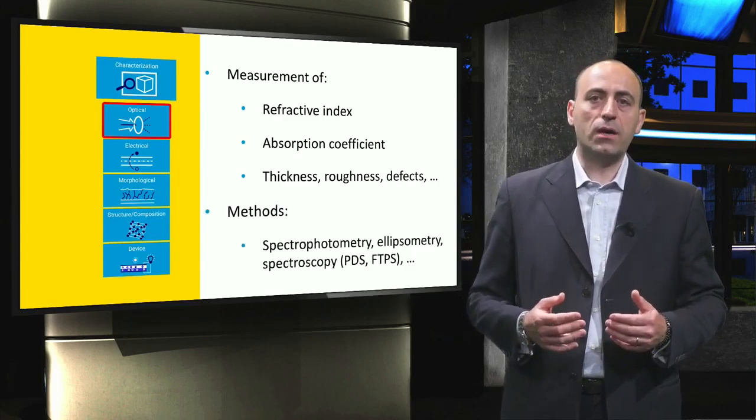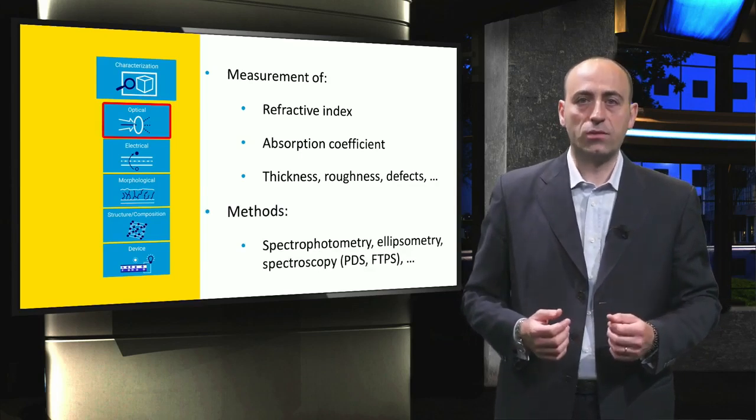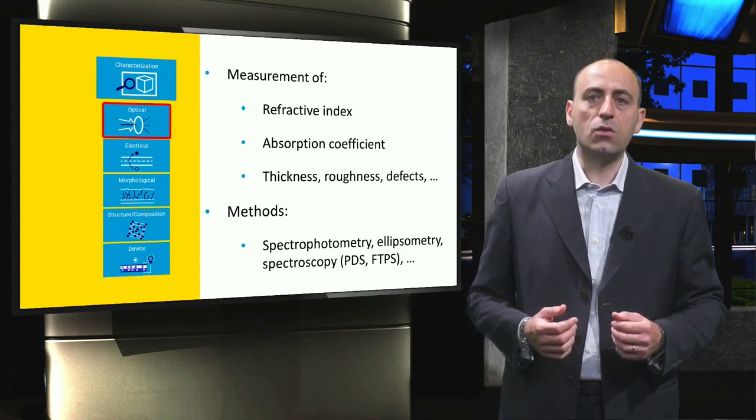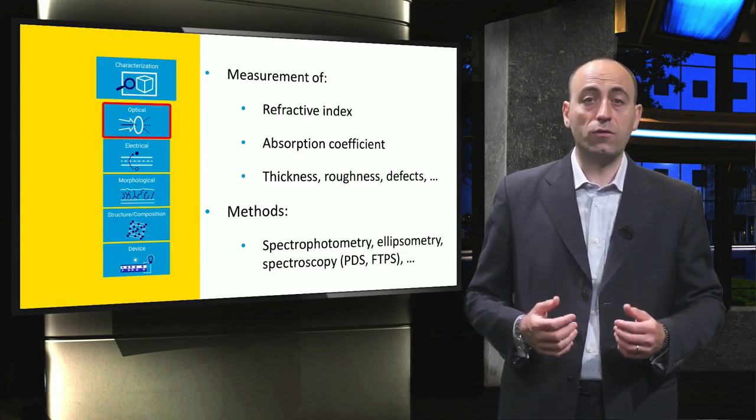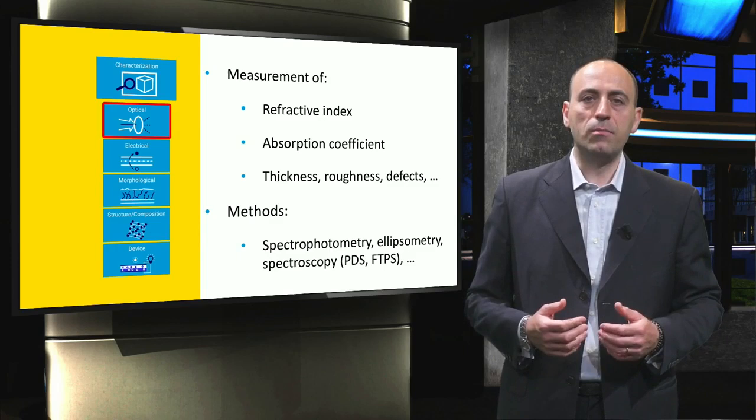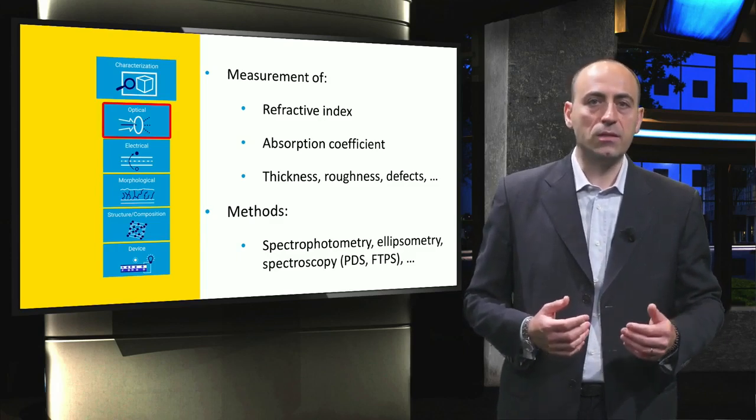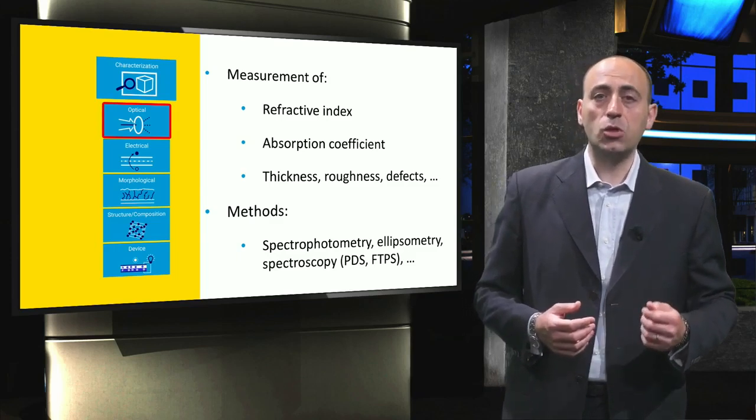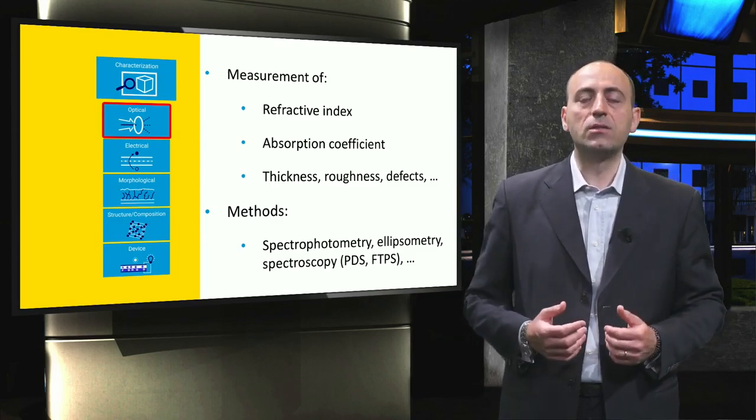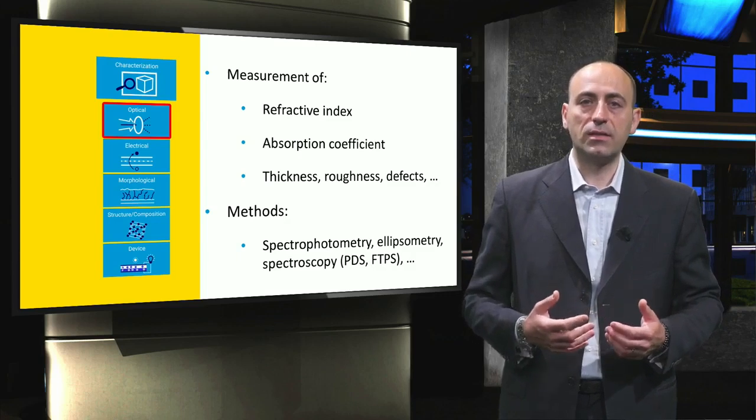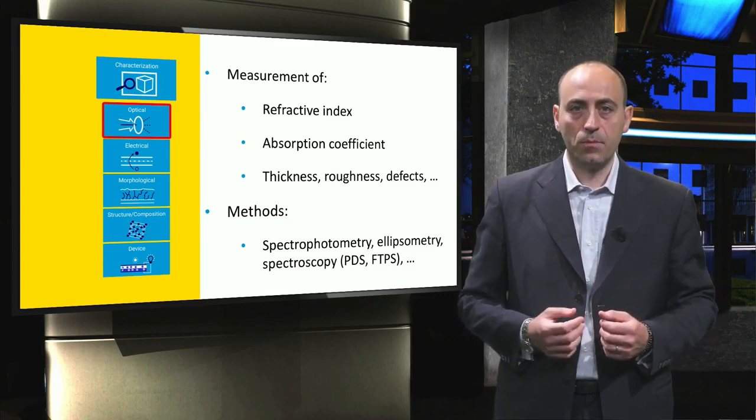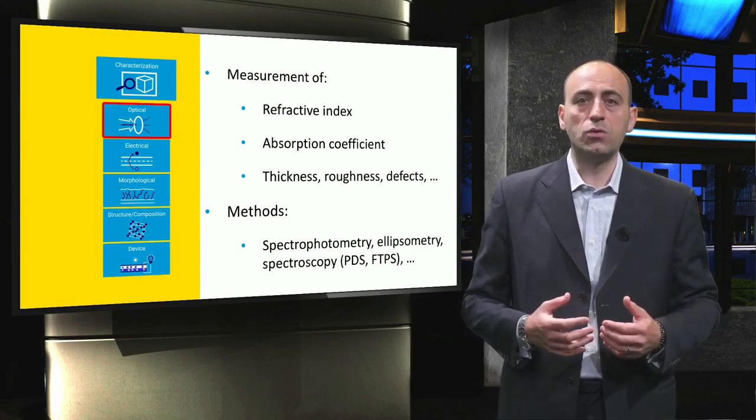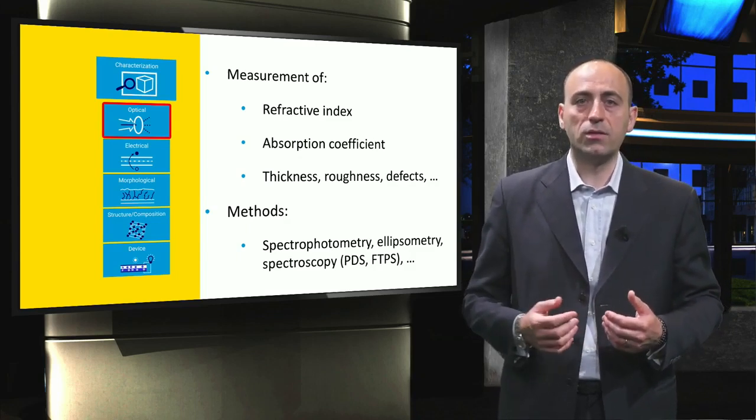Several methods are used in the photovoltaic sector to characterize the optical properties of materials. In this course, we will focus on spectrophotometry, which allows the measurement of wavelength-dependent reflectance and transmittance of layers and devices. We will then discuss ellipsometry, one of the main techniques to determine the refractive index and absorption coefficient of materials. Both spectrophotometry and ellipsometry can also be used to obtain the thickness and roughness of the layers.